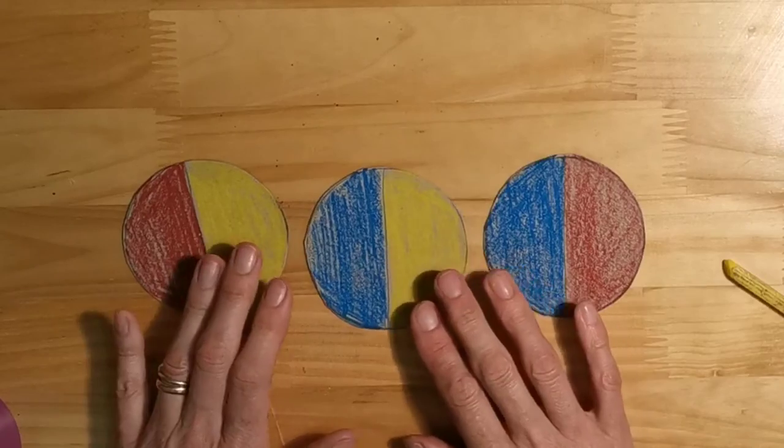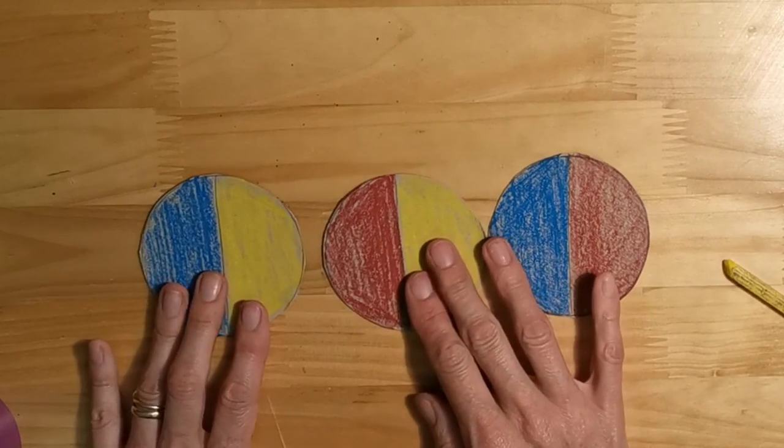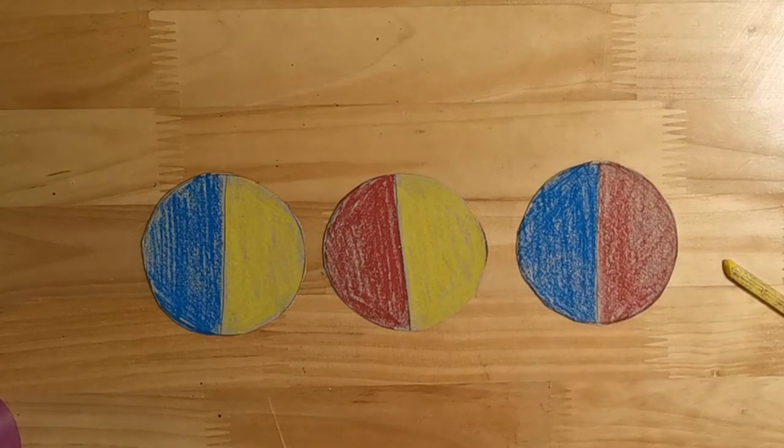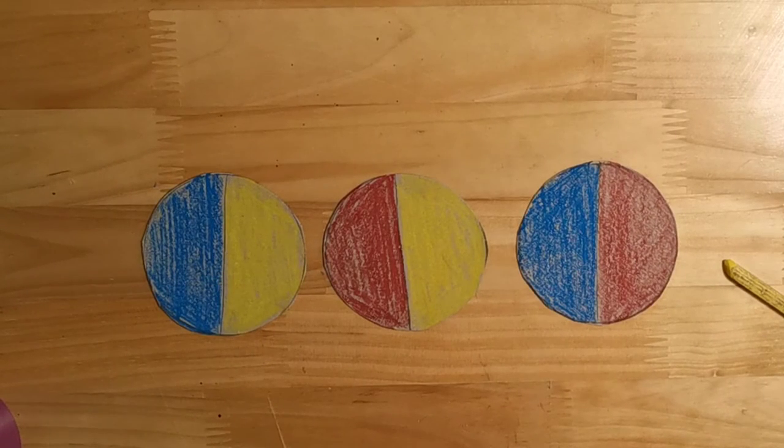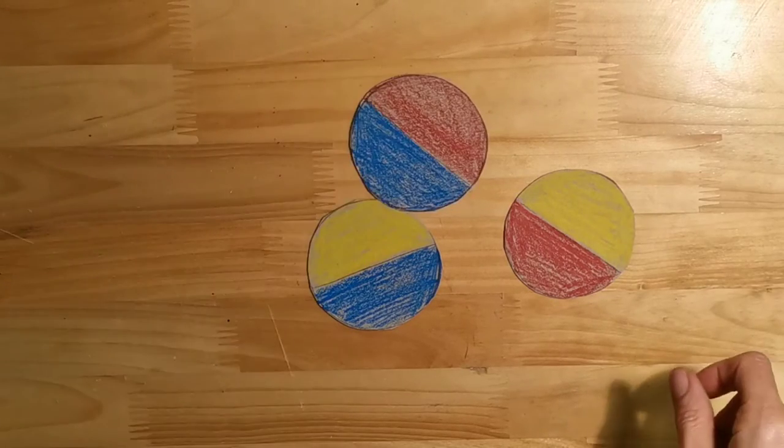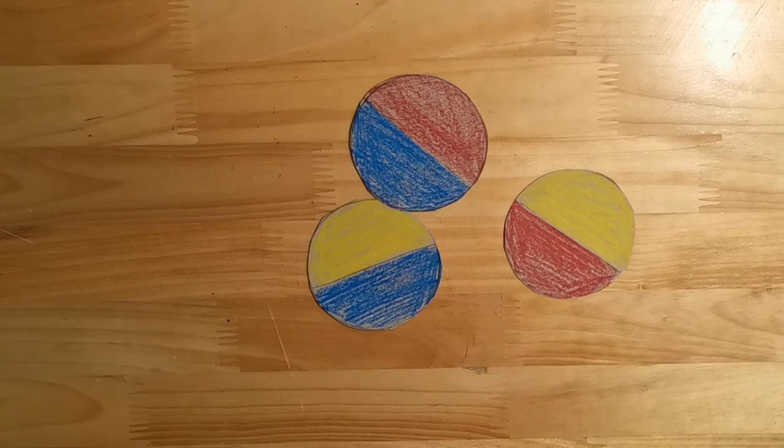When you have your three circles, you can see each of them here now. You are going to need to make a hole in the middle of each circle. You might, well you probably will, need an adult to help you with this. I'm going to find the middle of my circle.